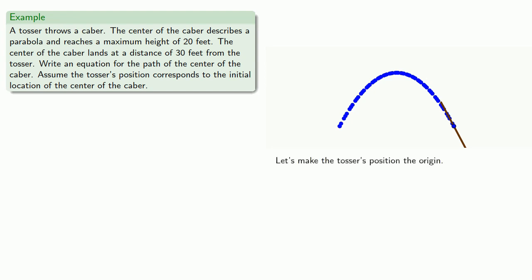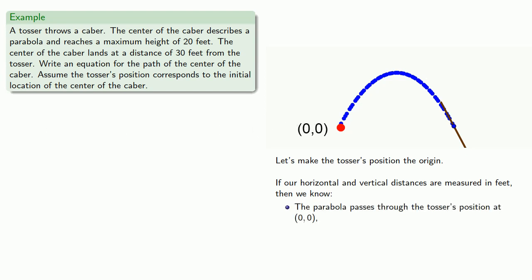So let's make our tosser's position the origin. If our horizontal and vertical distances are measured in feet, then we know that the parabola passes through the tosser's position at (0, 0). It also passes through the landing point at (30, 0).